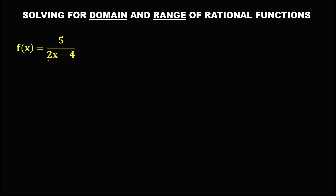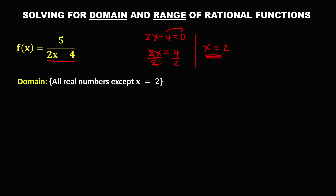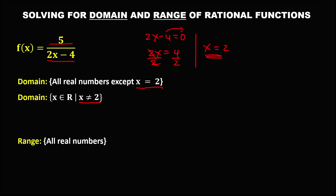For this given, equate the denominator to 0 to find the domain. So 2x minus 4 equals 0. Then transpose — so 2x equals positive 4. Then divide by 2. So x equals positive 2. Therefore, the domain is all real numbers except x equals positive 2, or x is an element of real numbers such that x is not equal to positive 2. Then to find the range, since in the numerator there is no variable x, the range is all real numbers, or y is an element of the real numbers.